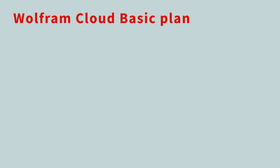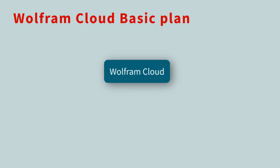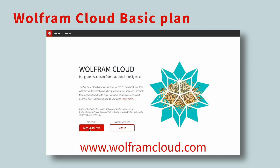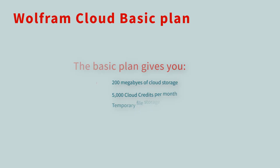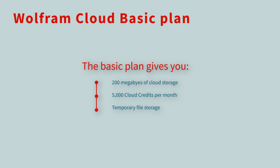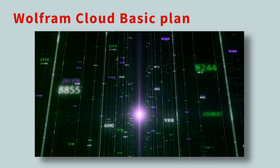The quickest and simplest way to dive into the Wolfram Language is through the Wolfram Cloud. Go to wolframcloud.com and click the Sign Up for Free button — you will be prompted to create a Wolfram ID. The basic plan gives you 200MB of cloud storage, 5,000 cloud credits per month, and temporary file storage. For most built-in computations, you will not need to use any cloud credits. With this free account, you will be able to start using the Wolfram Language right away as your computational playground.